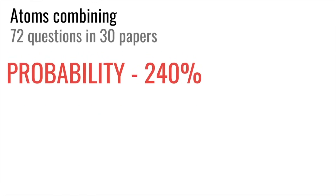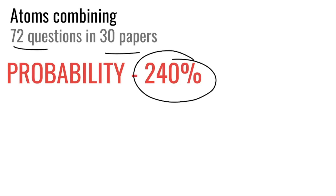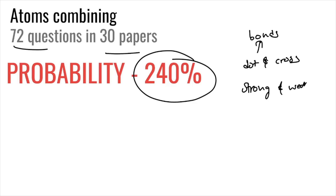Atoms combining has a probability of 240% — almost two questions per paper. Expect questions on bonds, including dot and cross diagrams where you identify which is correct. You also need to discuss strong and weak bonds and compare them with intermolecular forces (IMF), boiling points, and melting points. Almost two questions every paper with a 240% chance of it coming.